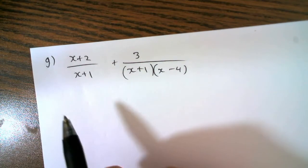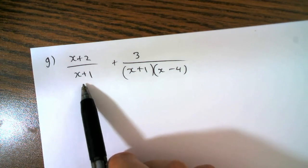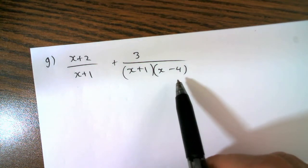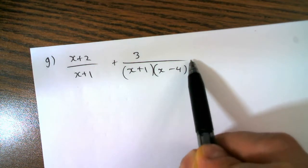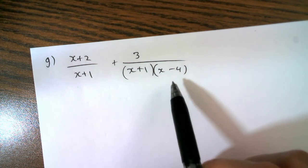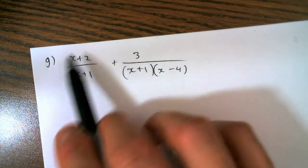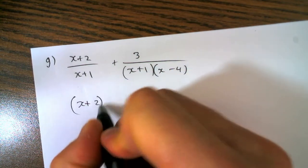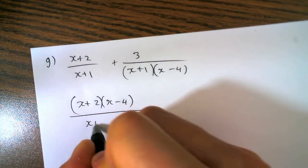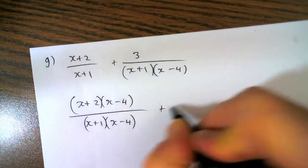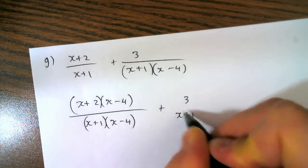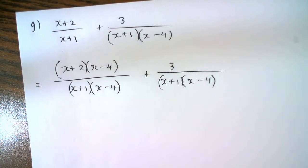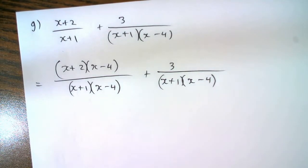I see in my denominator I have an (x plus 1) in both rational expressions, and I also have an (x minus 4) factor in this rational expression. So I'm going to use it to get a common denominator in this rational expression, and so now I've got common denominators.